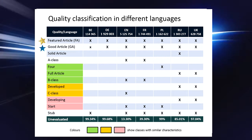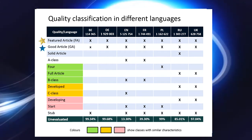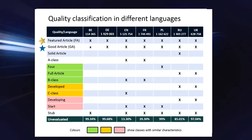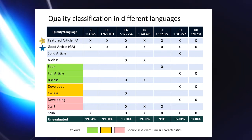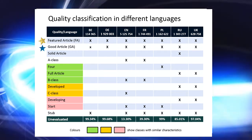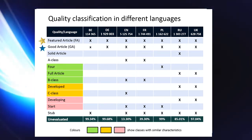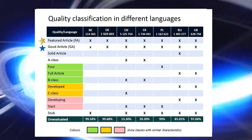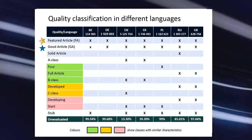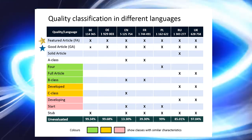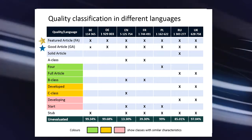In Wikipedia there are generally two groups of grades: those that can be awarded after a discussion by a community — higher quality classes — and those that can be assigned by users alone — lower quality classes, reflecting rather the stage of development of an article. The highest quality classes, most notably Featured Article and Good Article, can only be awarded as a result of a positive voting.